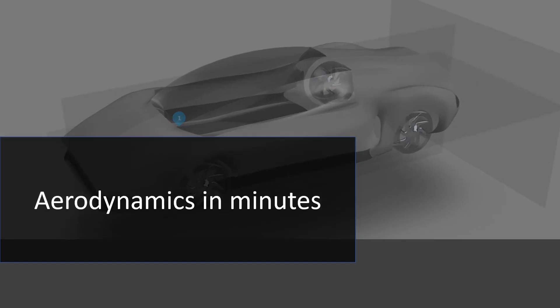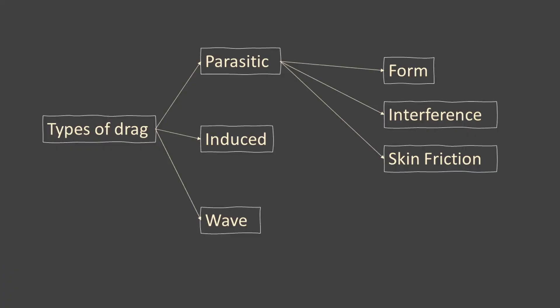Welcome to Aerodynamics in Minutes. In this video we are going to see the different types of drag. There are three types of drag: parasitic drag, induced drag, and wave drag.